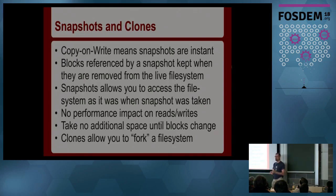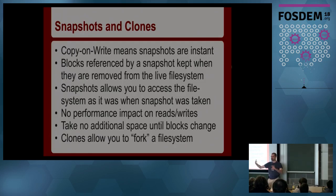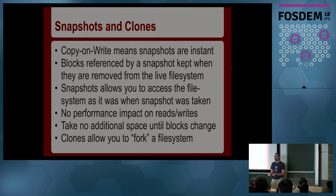By using clones — a writable version of a snapshot — you make a second file system that is exactly what that snapshot was and can be changed, but any blocks still the same are shared and consume no additional space. It's like forking a file system, similar to cloning on GitHub. For example, to test an upgrade: snapshot the file system and clone it, run the upgrade on the clone — if it works, promote it to being the master; if not, throw it away, clone again, and try until it works, all without taking up any additional space.